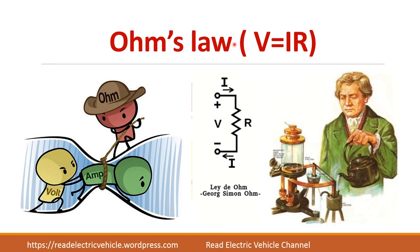Now let us see about Ohm's Law. Ohm's Law was found by the scientist George Simon Ohm. According to him, voltage and current are interrelated — voltage always helps the current to flow, but resistance limits the current. If resistance is high, only less current will flow; if resistance is less, current can flow easily.